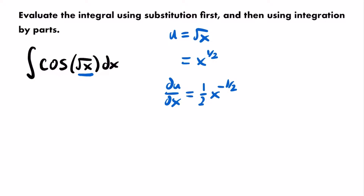Multiplying both sides by dx gives us du equal to one-half times x to the negative one-half power times dx. When we typically use u-substitution, we want to be able to find whatever du equals within our integral. But as mentioned, the derivative of the square root of x — one-half times x to the negative one-half — is nowhere to be seen in this integral.